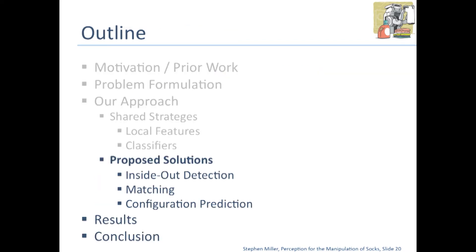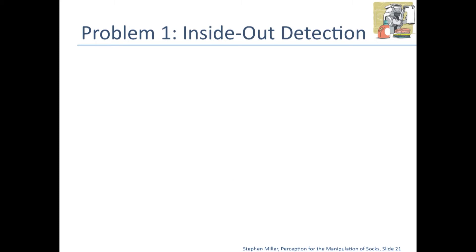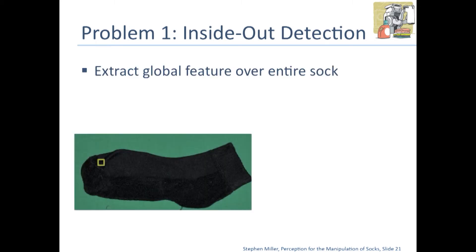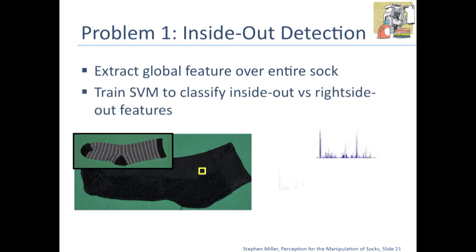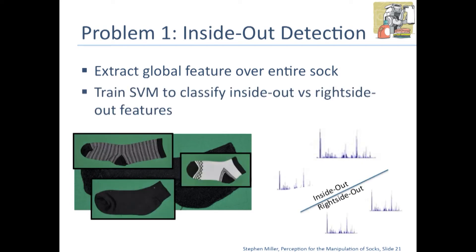Now for some proposed solutions. It's interesting to note that the first two problems — inside-out detection and matching — can be solved just with appearance using fairly standard techniques. But predicting the configuration of the sock requires some global structure built in, since local features alone aren't enough. For inside-out detection, it's fairly straightforward: we extract a global feature over the entire sock, then train a support vector machine to classify inside-out versus right-side-out socks.